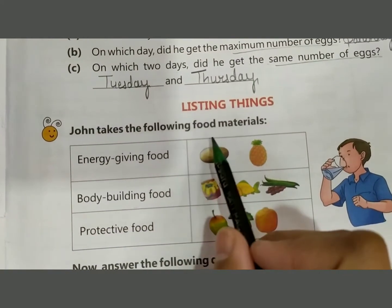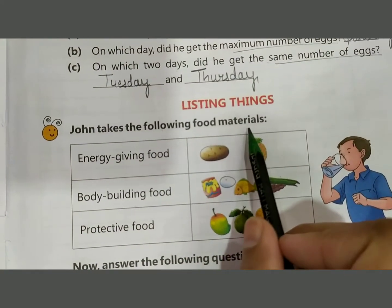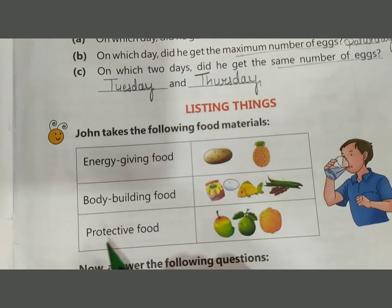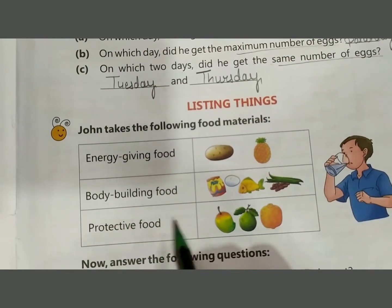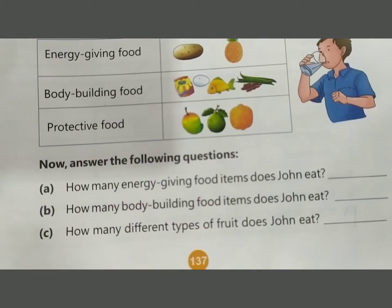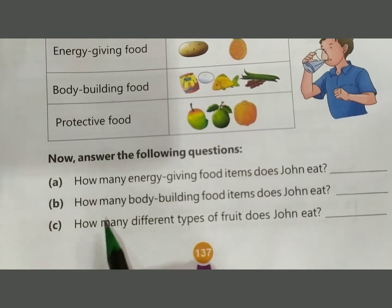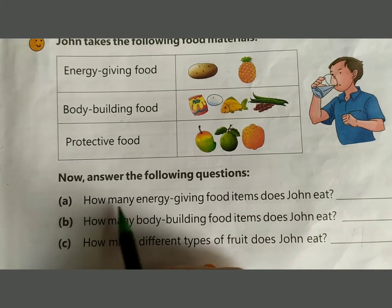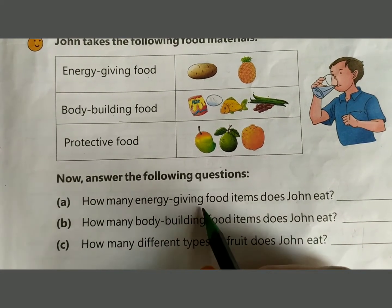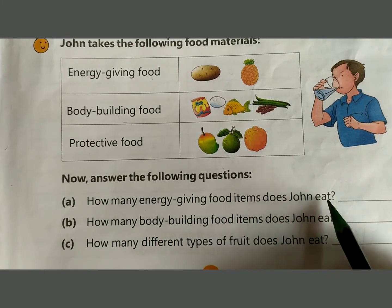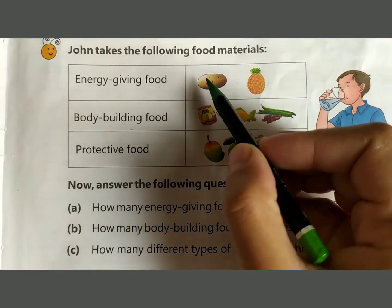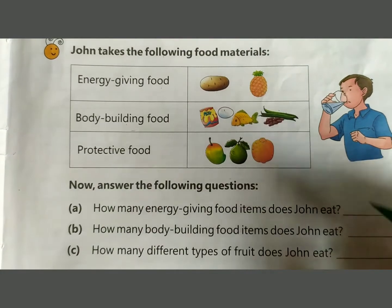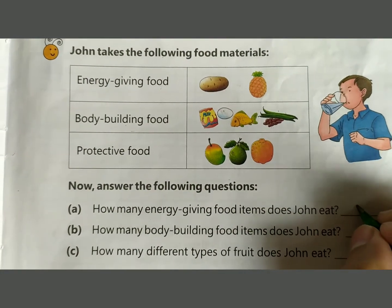Next: John takes the following food materials — energy giving food, body building food, and protective food. Now answer the following questions. How many energy giving food items does John eat? Count: 1, 2. Write 2.